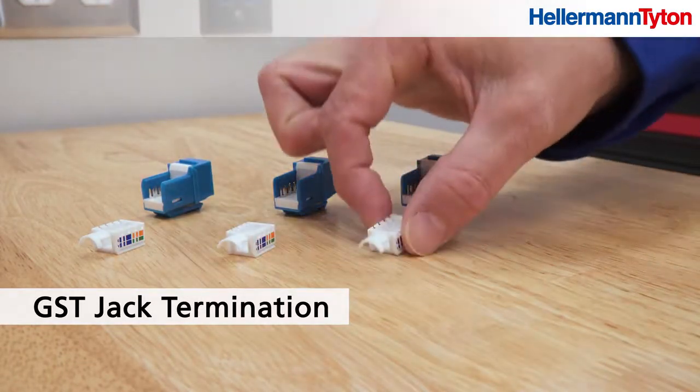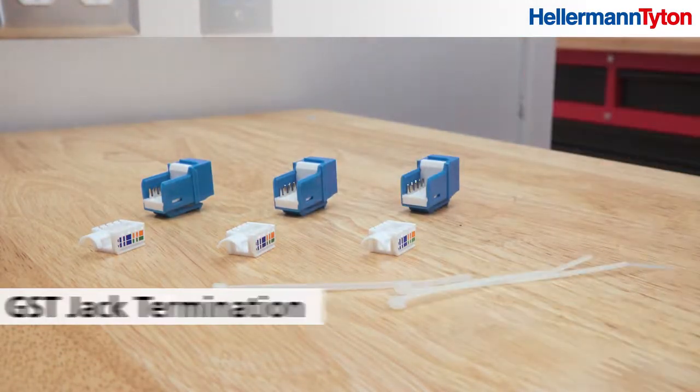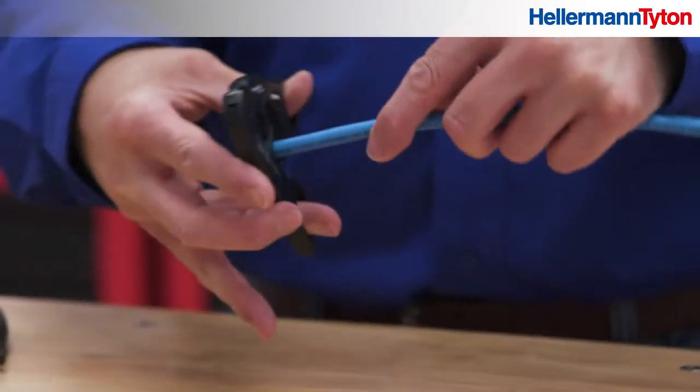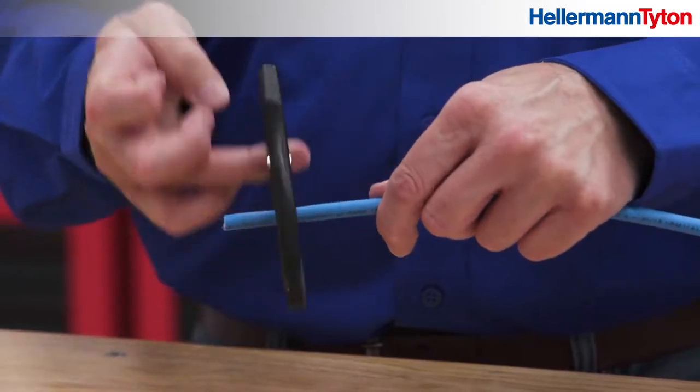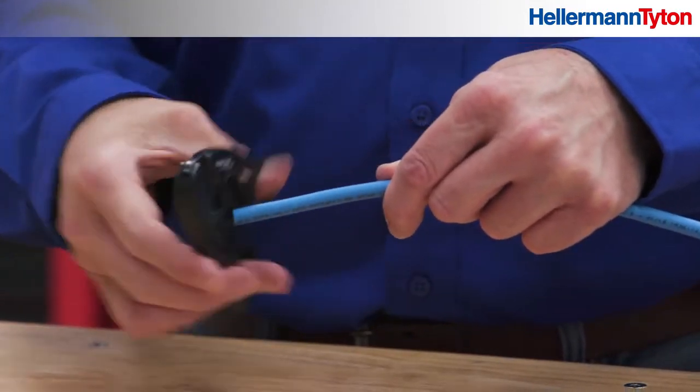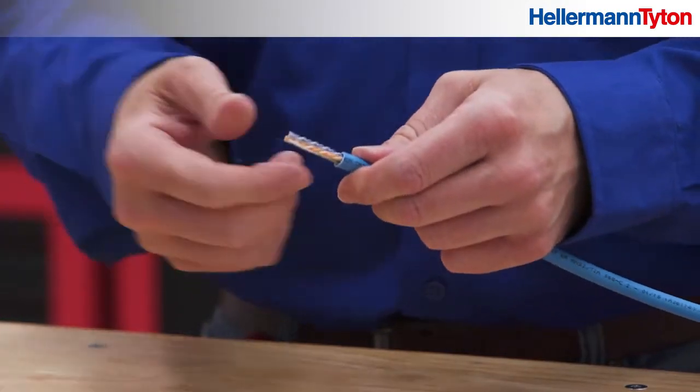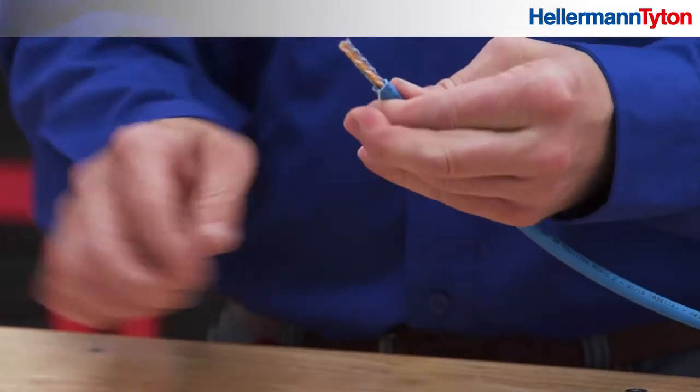Let's terminate a jack using the Hellerman Titan GST pocket tool. First, cut and strip back about one and a half inches of the cable jacket. Take care not to cut or nick the wires. Cut off the ripcord and cable separator.